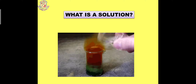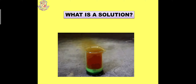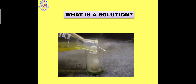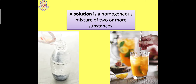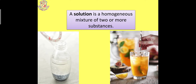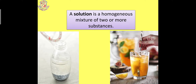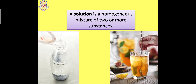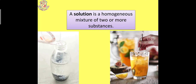Coming to what is a solution. We all know that when we combine two substances together, keeping one substance in a liquid form, it results in the formation of a solution. As students of chemistry, we will study the definition in proper systematic language. A solution is a homogeneous mixture of two or more substances. Homogeneous means the substance which has the same composition throughout. The best examples are soda water and lemonade, where the whole concentration is the same throughout.